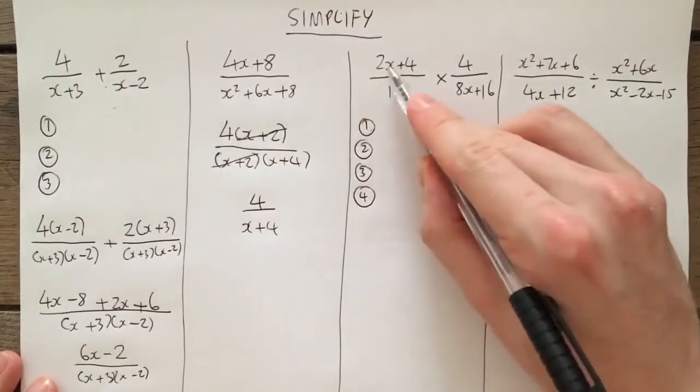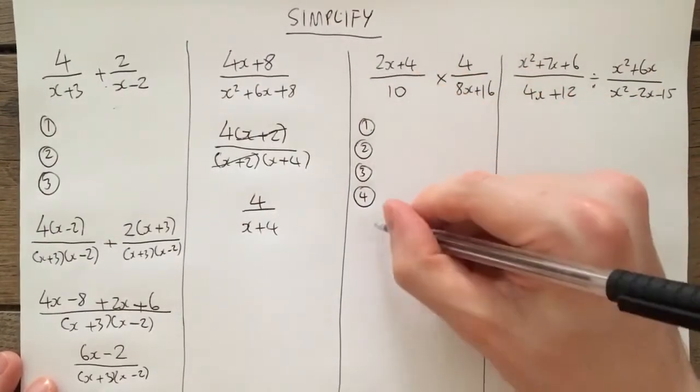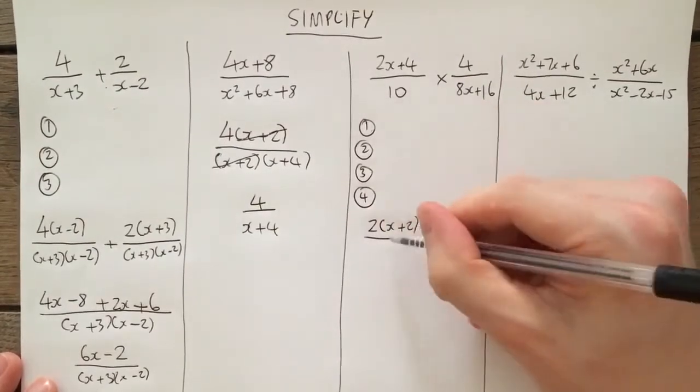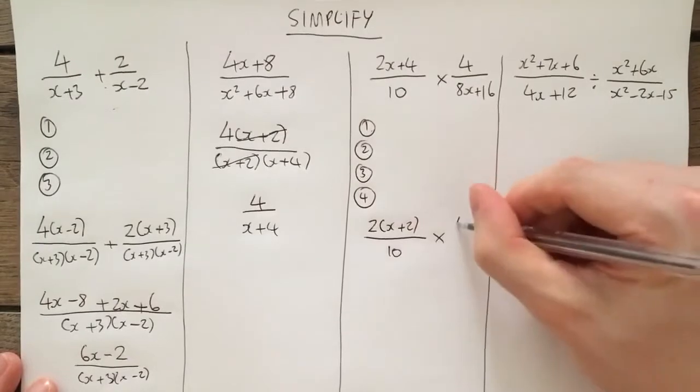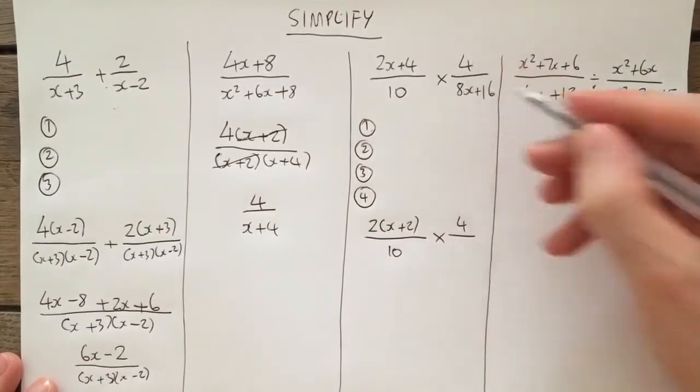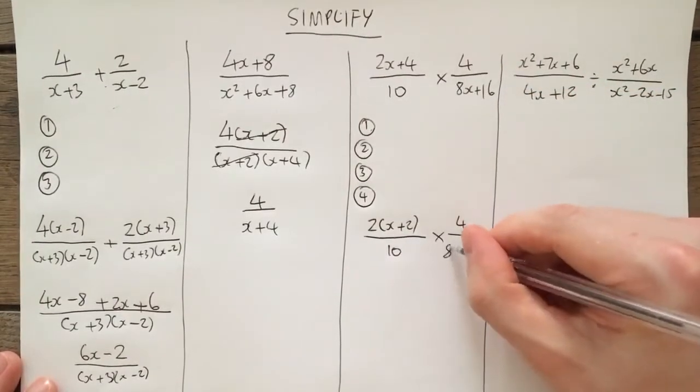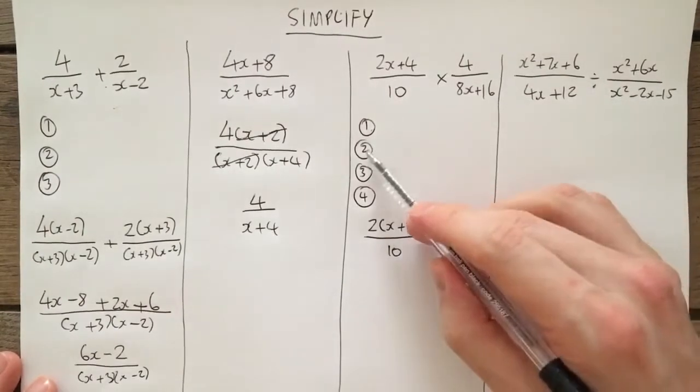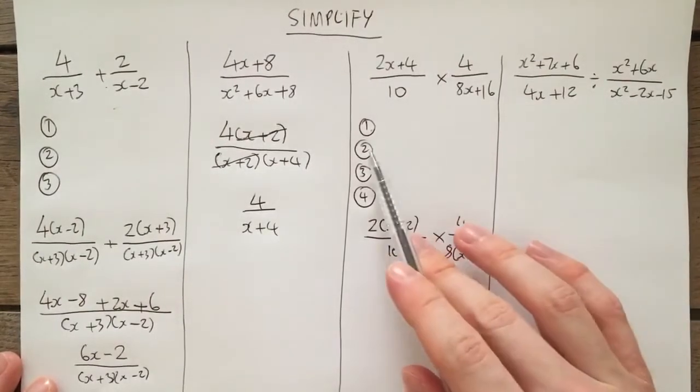So now I look at this fraction here, can I factorize? Well, 2 comes out of that denominator. So 2 bracket x plus 2 over the 10 cannot be factorized, times by the 4, which also cannot be factorized. And in this denominator, 8 bracket x plus 2 can be factorized.